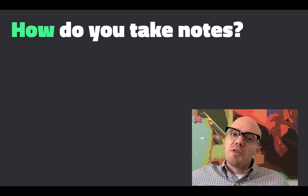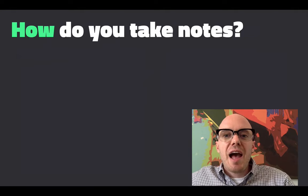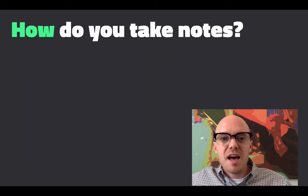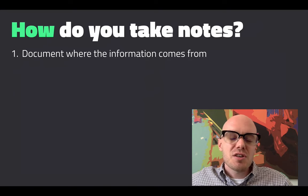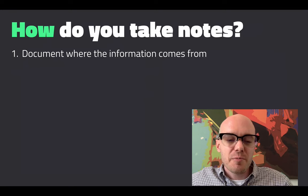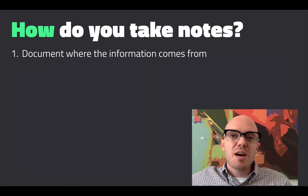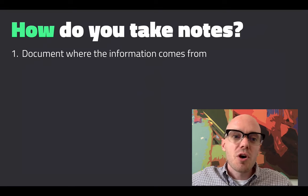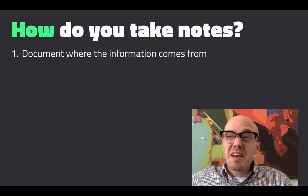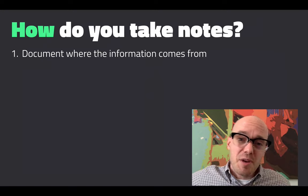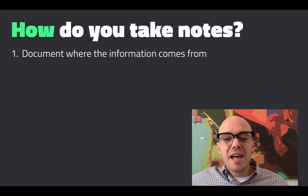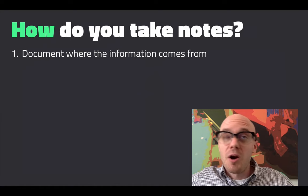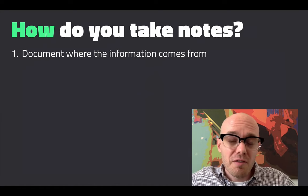Now we've talked about where you keep your notes. Let's talk about how you take notes. For me, there are four elements that good note-taking should have. The first thing is good notes should document where the information comes from. You're going to come across a lot of articles, book chapters in edited volumes, or research monographs, and you might not have the chance to come across that information again. So you need to quickly capture it and quickly capture where it comes from so you can cite it in your papers or find it again.